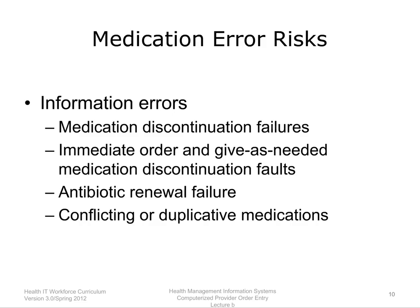The 22 situations where CPOE increased the probability of medication errors were categorized into two groups: (1) information errors generated by fragmentation of data and failure to integrate the hospital's several computer and information systems, and (2) human-machine interface flaws reflecting machine rules that do not correspond to work organization or usual behaviors. (Koppel et al., 2005) Examples of information errors include medication discontinuation failures, immediate order and give-as-needed medication discontinuation faults, antibiotic renewal failure, and conflicting or duplicative medications.